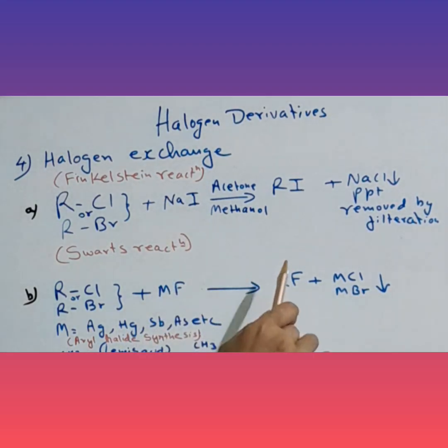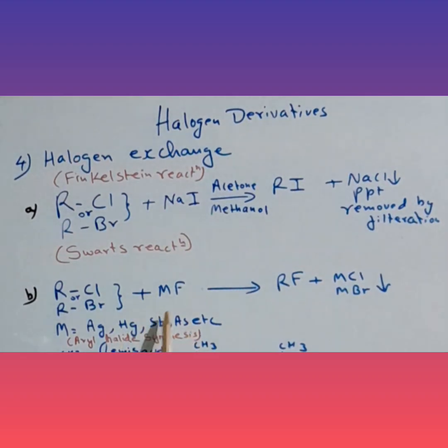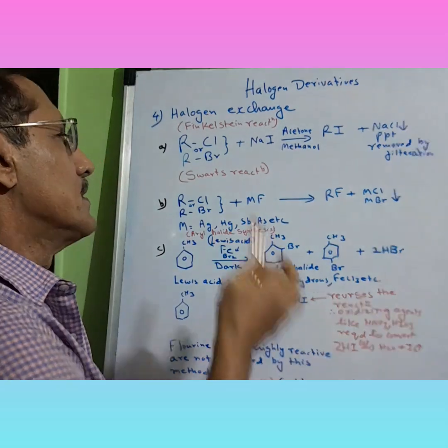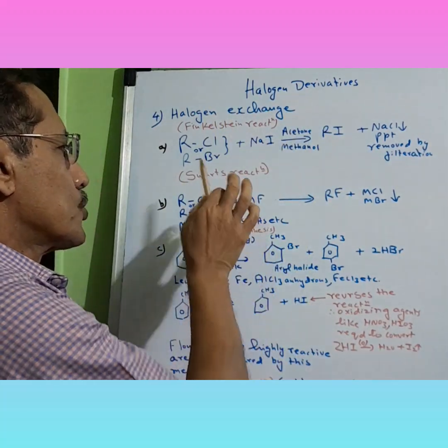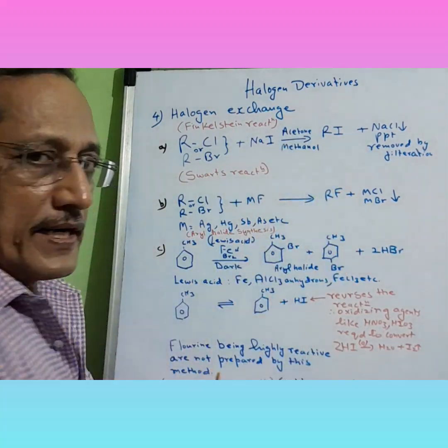Whatever metal you have taken, its chloride or bromide precipitates out and can be filtered and removed. So what we learned: Finkelstein gives alkyl iodide, Swartz gives alkyl fluoride.